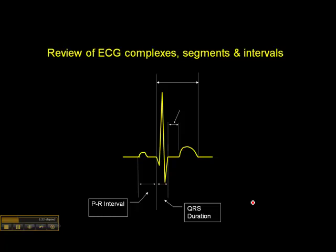Is it aberrant conduction because of a bundle branch block or a fascicular block or a bifascicular block? Or is it a drug effect? Is it because it's an ectopic beat in the ventricles? That's the question. But a normal QRS duration is less than 0.12 second.